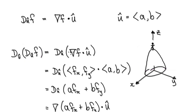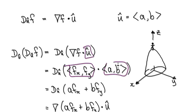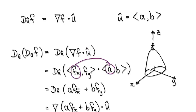We need to compute the concavity. So let's compute this. We need to work out the gradient vector — that would be the function partially differentiated with respect to x, and partially differentiated with respect to y, giving you this vector here. And then your unit vector is given by this. Now take the dot product: this times this gives you this, and then this times this gives you this.